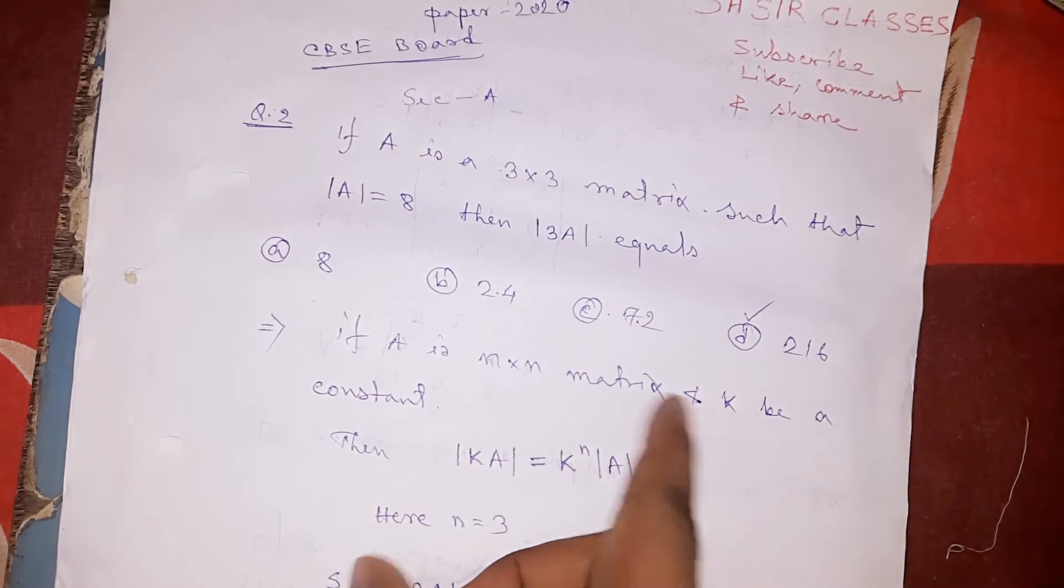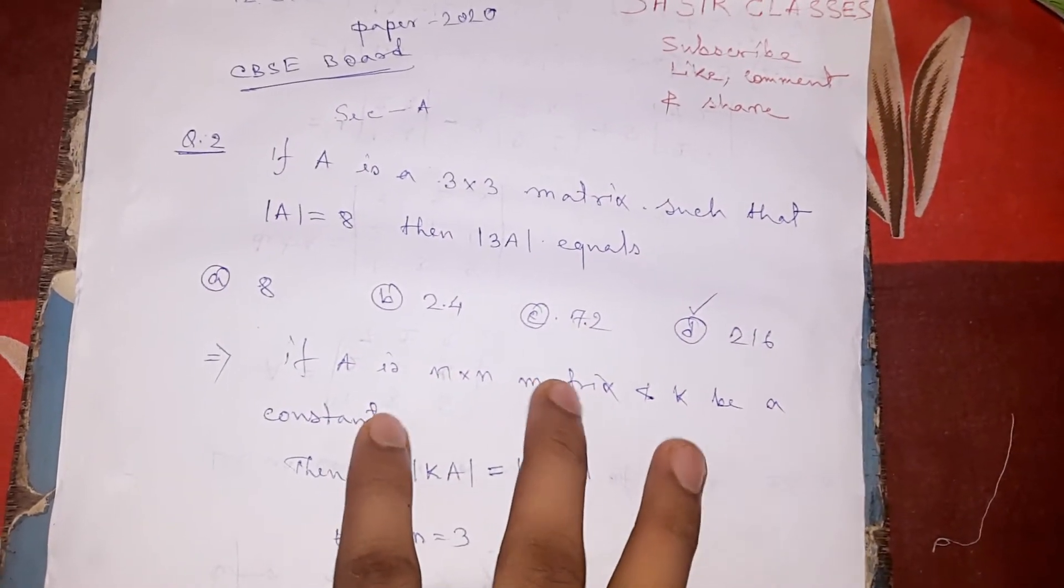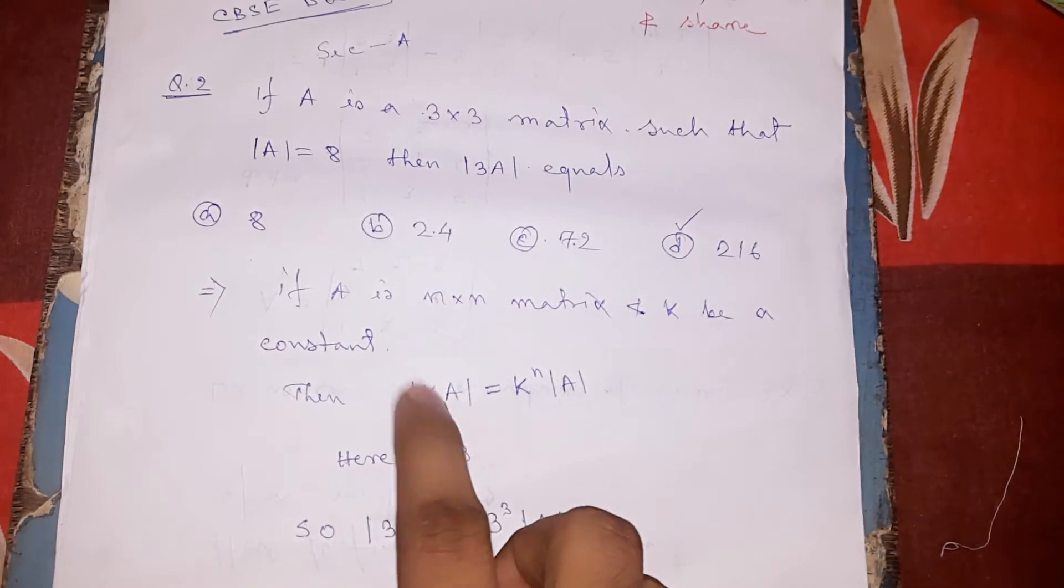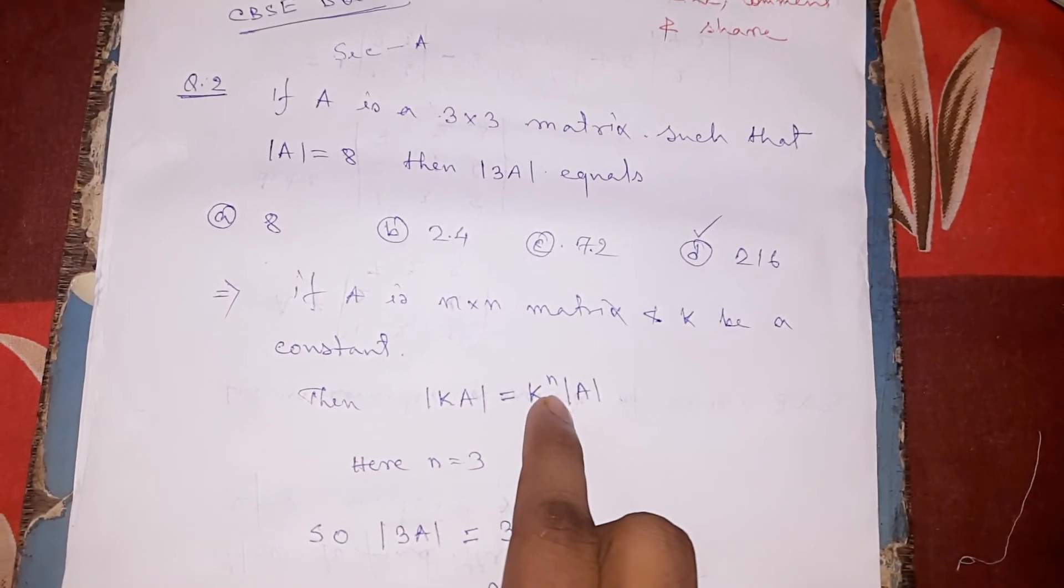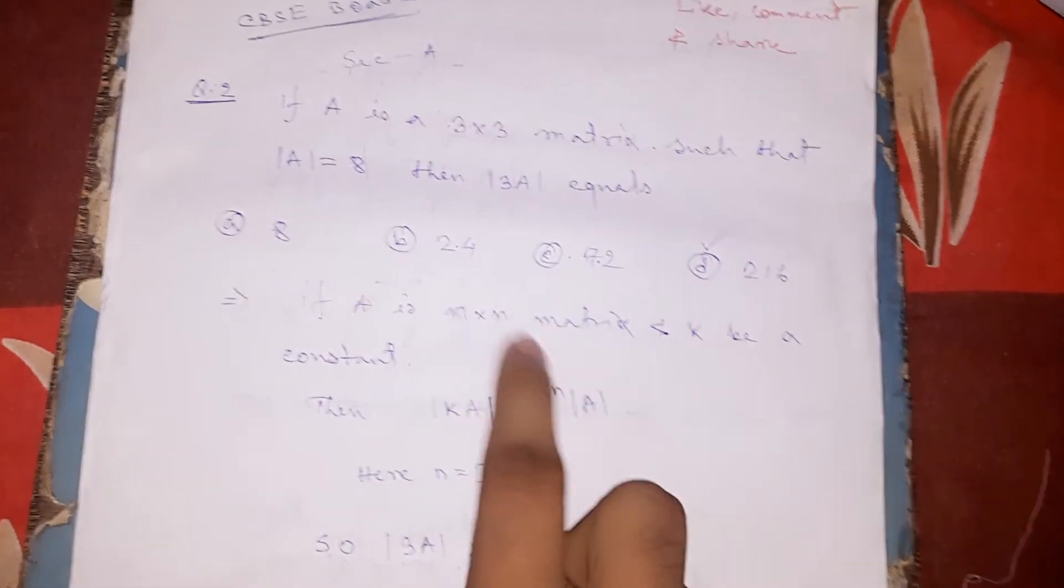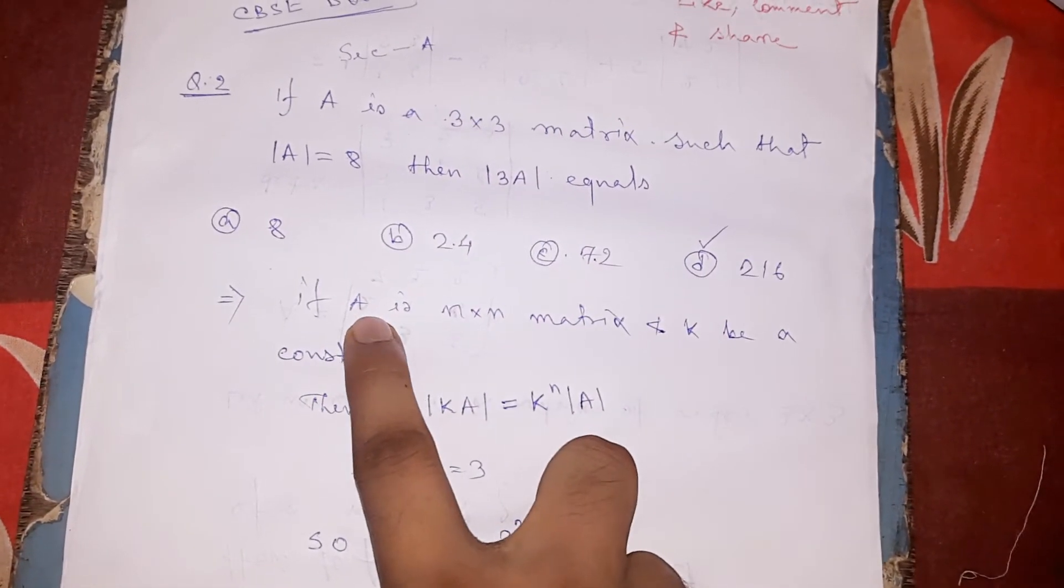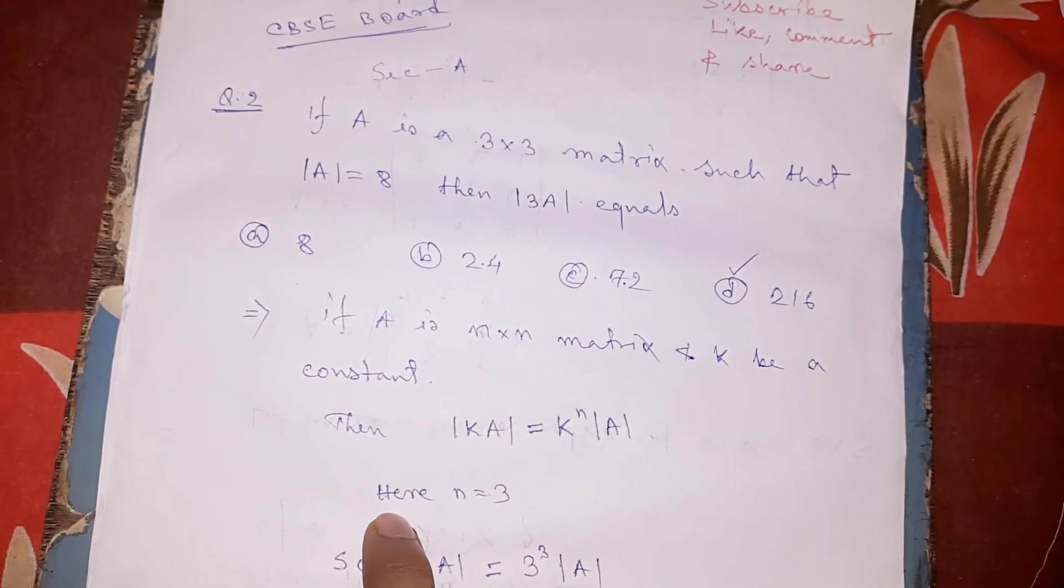We can write determinant of kA equals k to the power n times determinant of A, where n is the order of the matrix. The order of matrix A is 3.